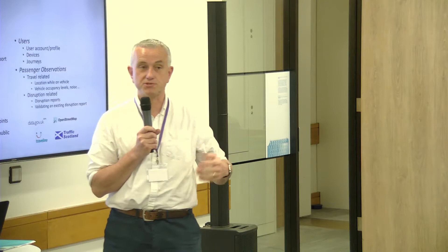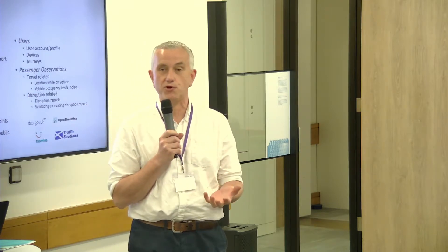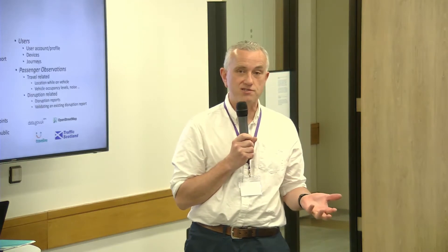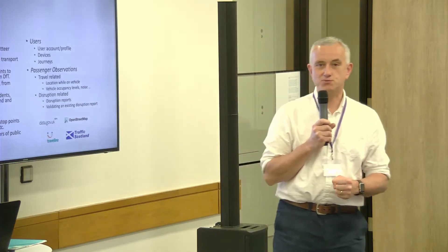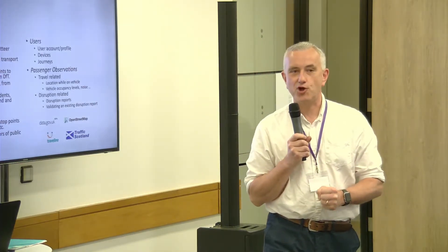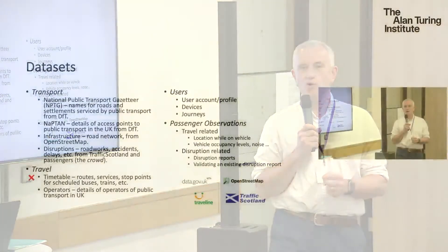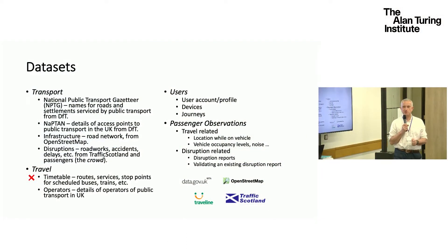We were interested in how we would represent disruption information — disruption to the bus network and the roads network. We looked at getting data from Traffic Scotland, but also whether members of the community using public transport could provide that data. We also had to try and get timetable data, and we ran into a huge brick wall there. Initially we couldn't get it; the operator said we could have it but only if we signed a special agreement. If we'd been trying to build a real open data solution, that would have been a real obstacle.